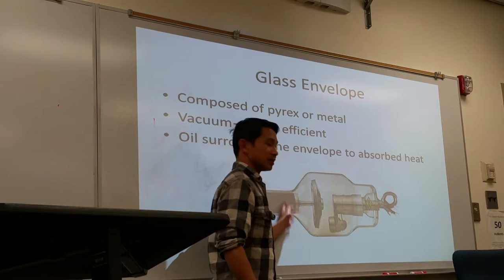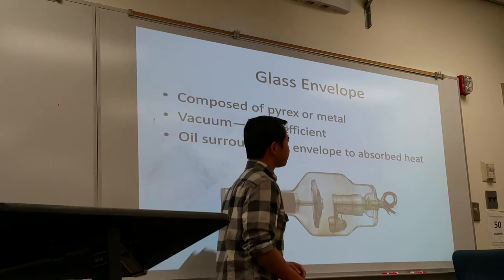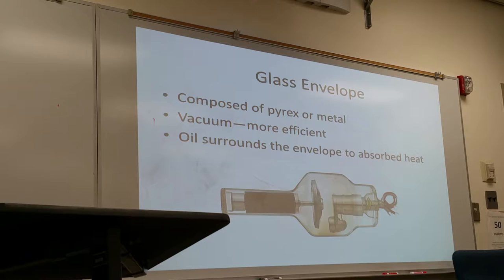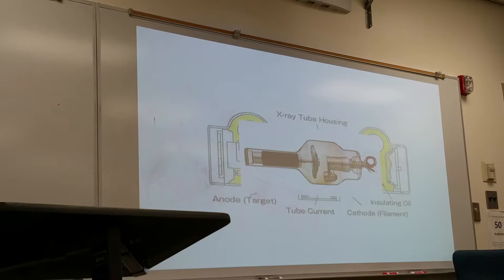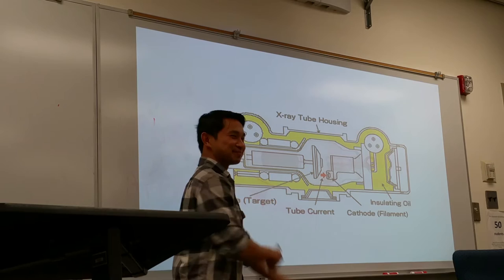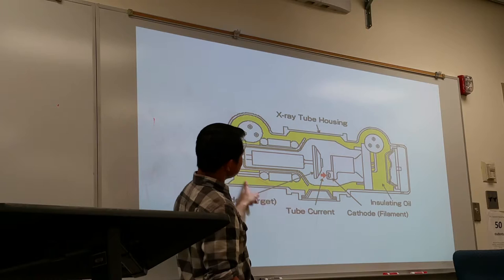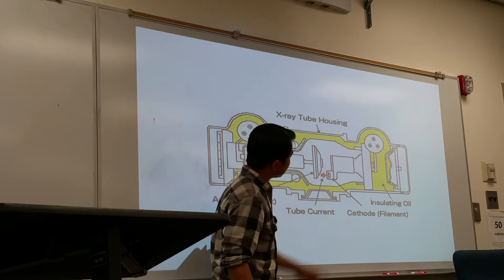Oil surrounds the envelope because it is inside the metal housing, and the metal housing has oil all around it to absorb heat. So the structure is: the envelope inside, surrounded by oil, with electron production occurring inside producing x-rays that come out through the window.